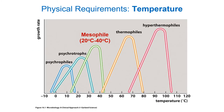Evolution often favors specialization. Organisms that become highly adapted to a narrow range of conditions have fewer competitors. On this chart, we see the preferences of five groups of prokaryotes, with temperature on the x-axis and growth rate on the y-axis. We have mesophiles — 'meso' meaning middle, 'phile' meaning to love — prokaryotes that love middle-of-the-road temperatures between 20 and 40 degrees Celsius. These are the bacteria most likely encountered in your environment, living on surfaces in your house, causing food to go bad, and living in our bodies like E. coli.